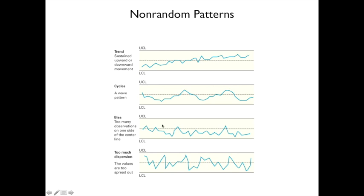Here are some non-random patterns, similar to patterns discussed in forecasting. A trend is where values slowly move from the lower control limit toward the upper control limit. A cycle shows values coming down, going up, and repeating. A bias is where all values are within the control limit but clustered along the bottom — you'd want to shift the whole distribution up. Too much dispersion means values jump from near the upper control limit to far below, with few values in the middle.